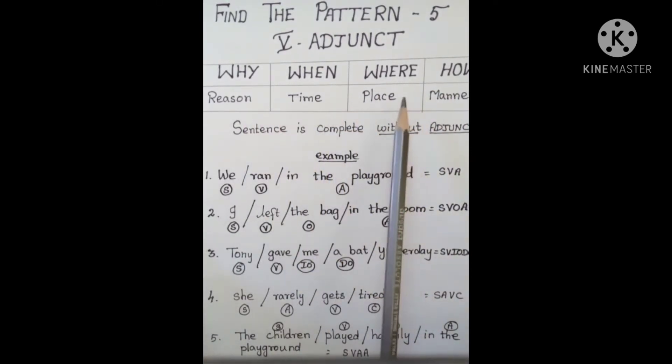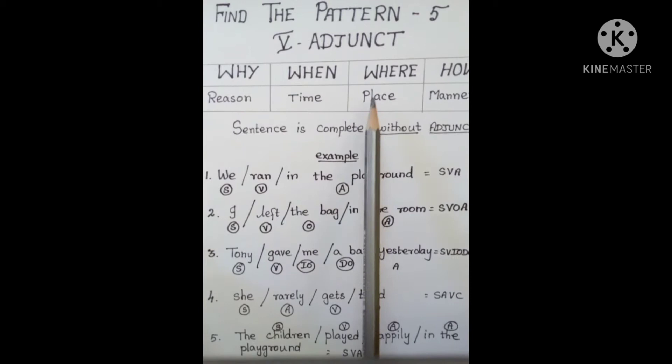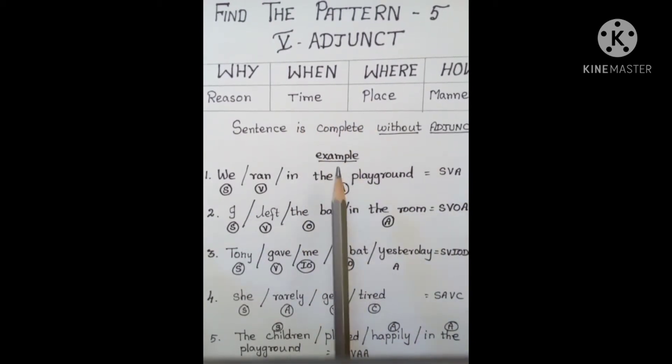If you remove the Adjunct, the sentence has a complete meaning. Adjunct doesn't affect the sentence. It adds more meaning to the sentence. That is the way. Now, let's look at the example.